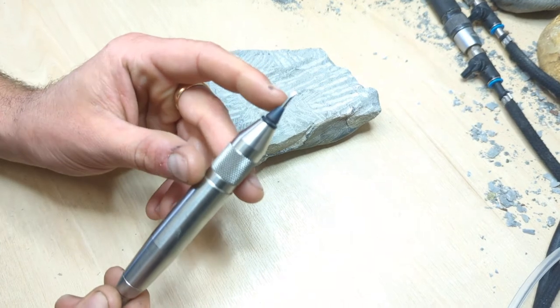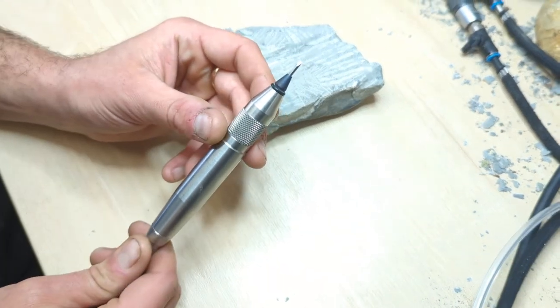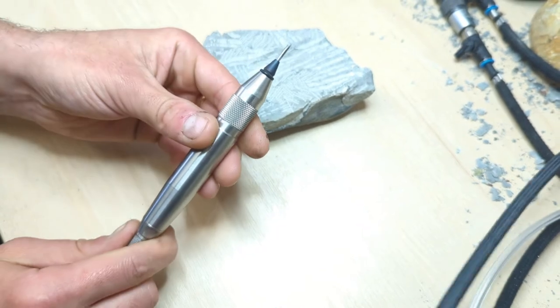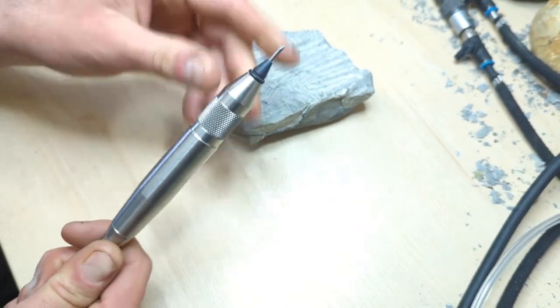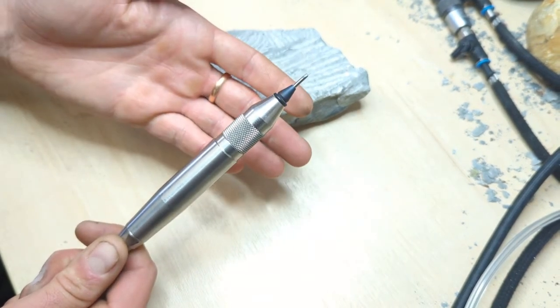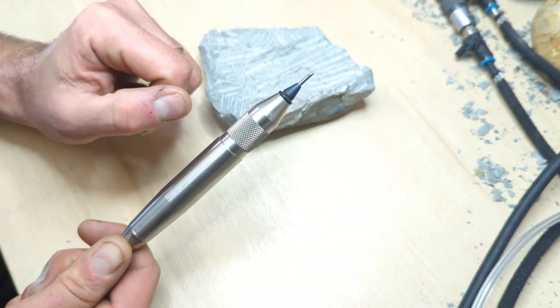After assembling the chisel stylus in the trilobite air scribe, you can turn the device on like that. But if you find that it doesn't work immediately as you twist it, you know the old trick, just give it a tap on the rock.